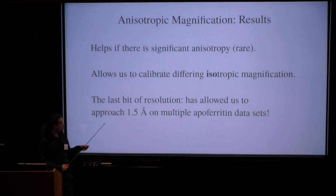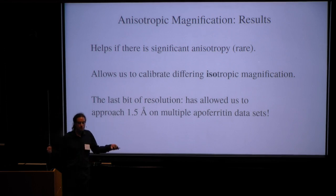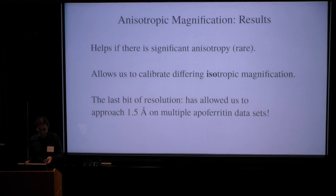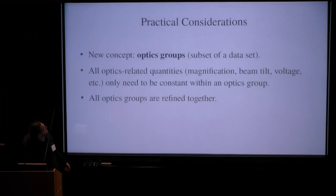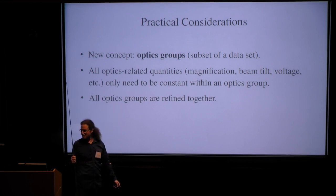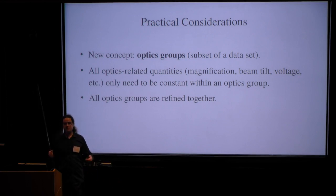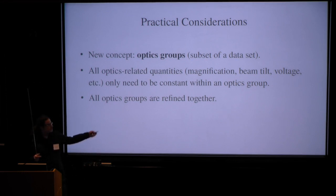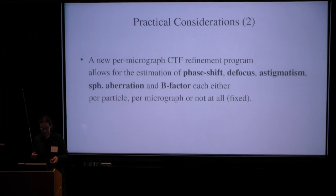So with this together, we can now approach what we shouldn't report as 1.5, but we can approach the highest resolutions we have measured so far. Also on a more practical side, we support a new concept of optics groups now. So all the optics-related quantities only need to be constant within one such optics group. But we can now refine data coming from different microscopes with different voltages even. And all of them can be refined together. And we can use the anisotropic magnification estimation to estimate the relative magnifications of the sub-optics groups.